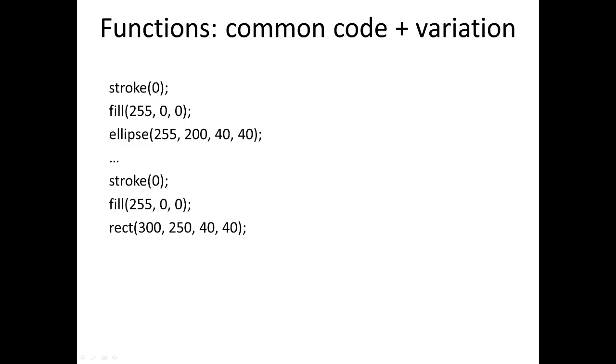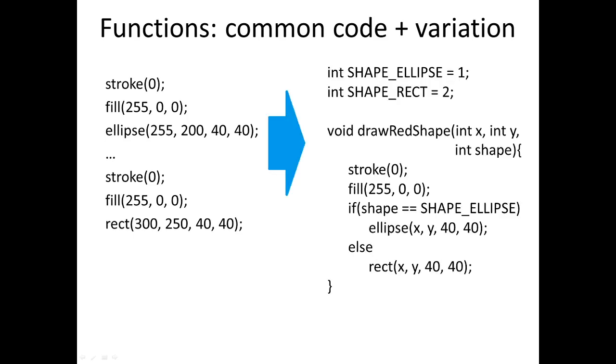We can still capture this. It's a little bit more complicated, but what we can do is we can introduce something that represents whether we have an ellipse or a rect. So we've got these two constants up the top here: an ellipse having the value one, rect having the value two. They're just totally arbitrary values that we're using.